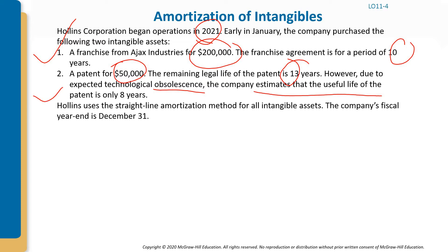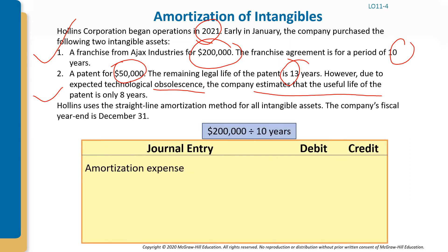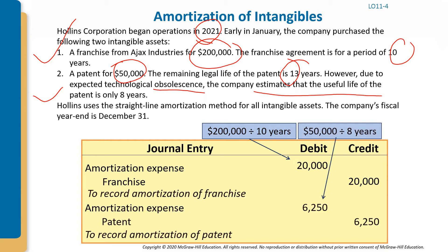Due to expected technological obsolescence, the company estimates the patent's useful life to be only 8 years. Using straight-line amortization for all intangible assets, we divide the value of each intangible by its useful life — 8 years for the patent, even though the legal life is 13 years.